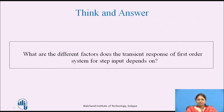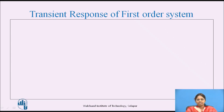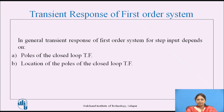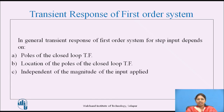What are the different factors that the transient response of a first order system for step input depends on? In general, the transient response depends on the poles of the closed loop transfer function and the location of those poles. It is independent of the magnitude of the input applied — any change in the magnitude of the step input will not affect the transient state output.